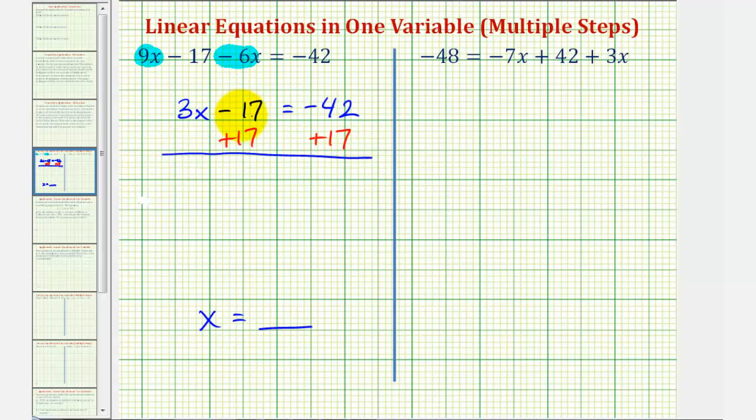Notice here we have negative 17 plus 17, that's zero, so the left side is now three x, and the right side is negative 42 plus 17, which is equal to negative 25.